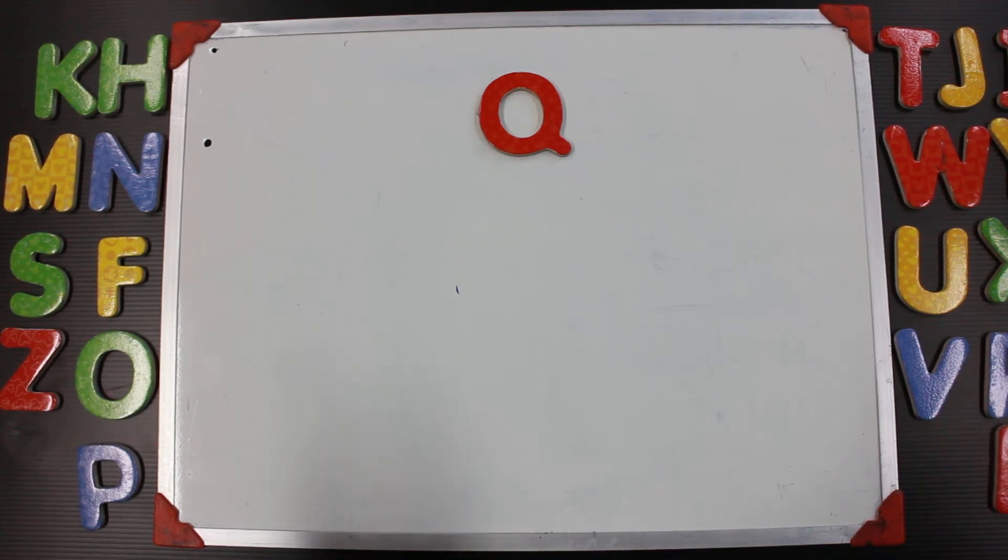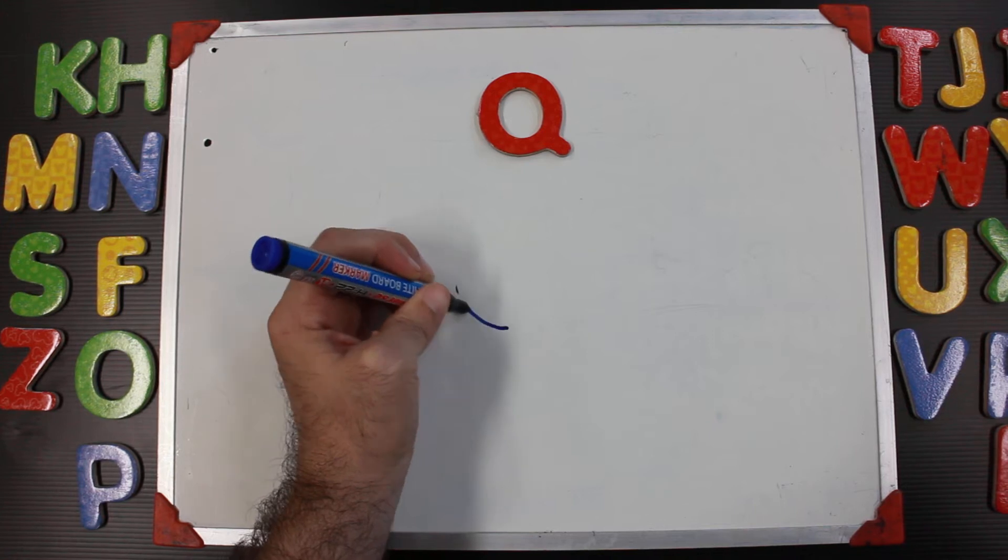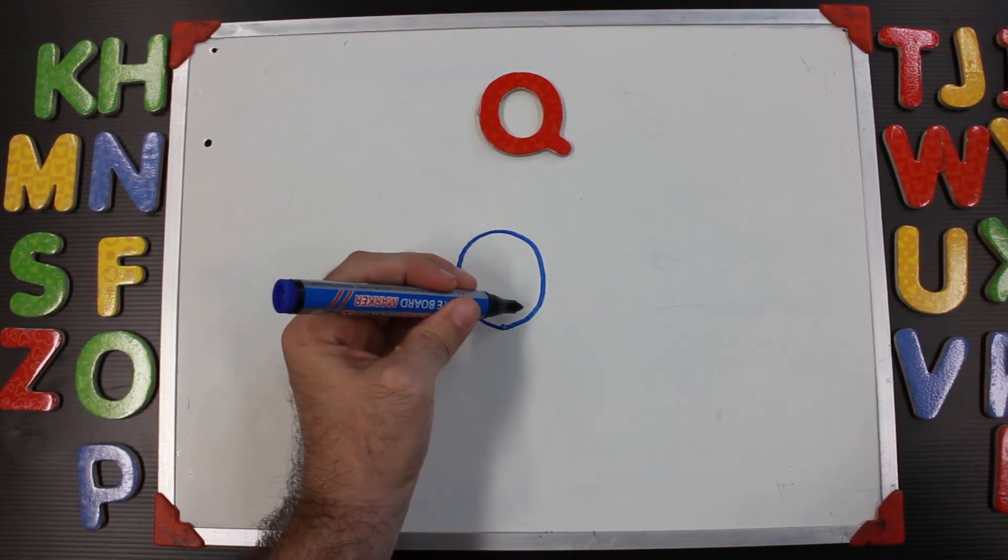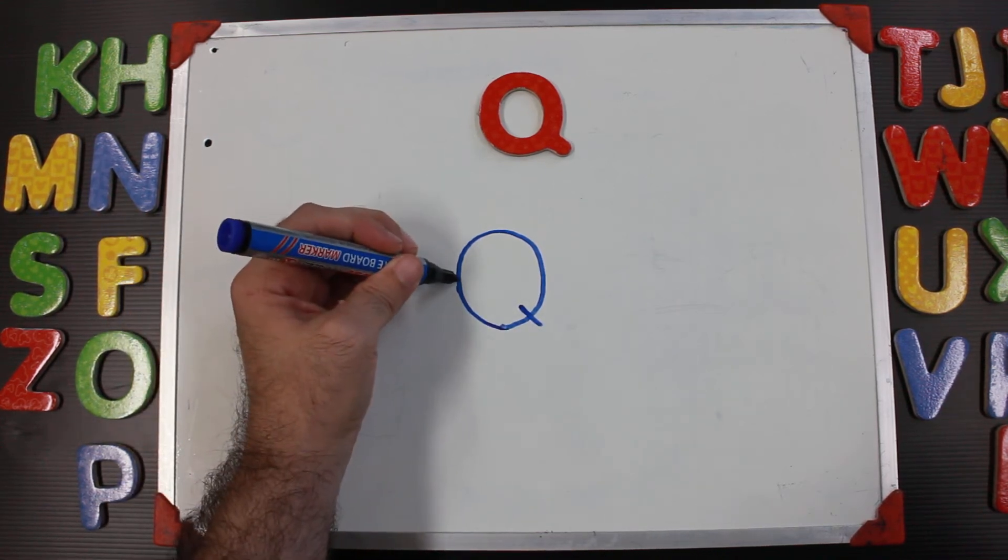Okay, we're going to work on letter Q. Now for letter Q, we will start at the bottom and make our circle. We will then put our little dash at the bottom right. For our drawing, we will add a